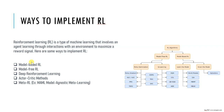Next is model-free reinforcement learning. This is a type of RL that does not use a model of the environment but learns directly from trial and error. For example, a mouse can learn to find cheese in a maze by exploring different paths and remembering which ones lead to a reward. This approach directly learns the optimal policy through trial and error, achieved through methods like Q-learning and SARSA.